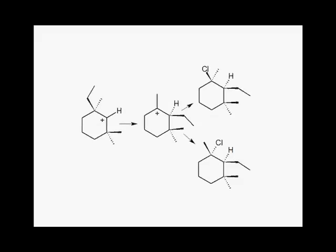So let's move on to the next possible 1,2 shift. So this time we're going to be counting to 2 going to the top. So I start at the C+, and I go 1,2, and I hit this ethyl group. So if this ethyl group undergoes a 1,2 shift,